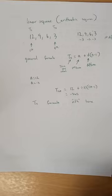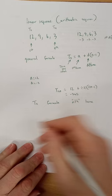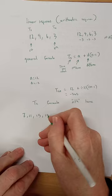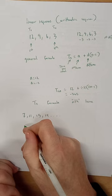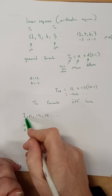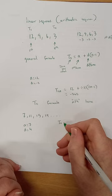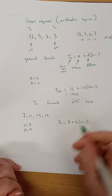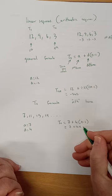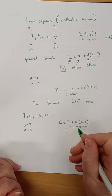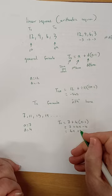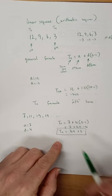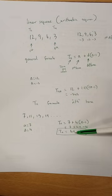Let's work out the nth term for the sequence 7, 11, 15, 19. The first term a is 7, and the difference is 4 since it goes up by 4 each time. Substituting into the formula: Tn = 7 + 4(n − 1). At higher level you must multiply out the bracket and simplify, giving 4n + 3. So the first term is 4(1) + 3, the second is 4(2) + 3, and so on.